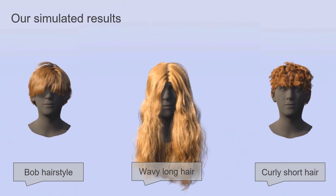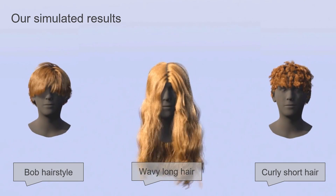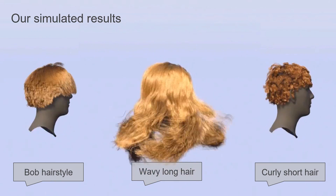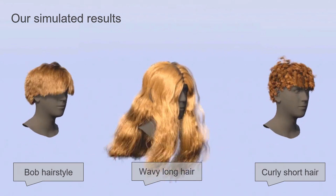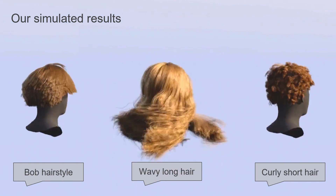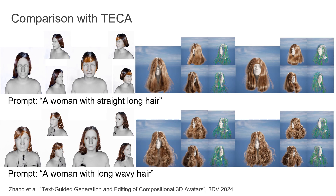The hairstyles produced by our method are ready to be simulated and realistically rendered via off-the-shelf computer graphics software. We show simulation results for bob hair style, wavy long hair, and curly short hair using Unreal Engine. These results are much harder to achieve with previous approaches such as TECA, which rely on implicit hair reconstruction functions and thus require custom simulation tools.